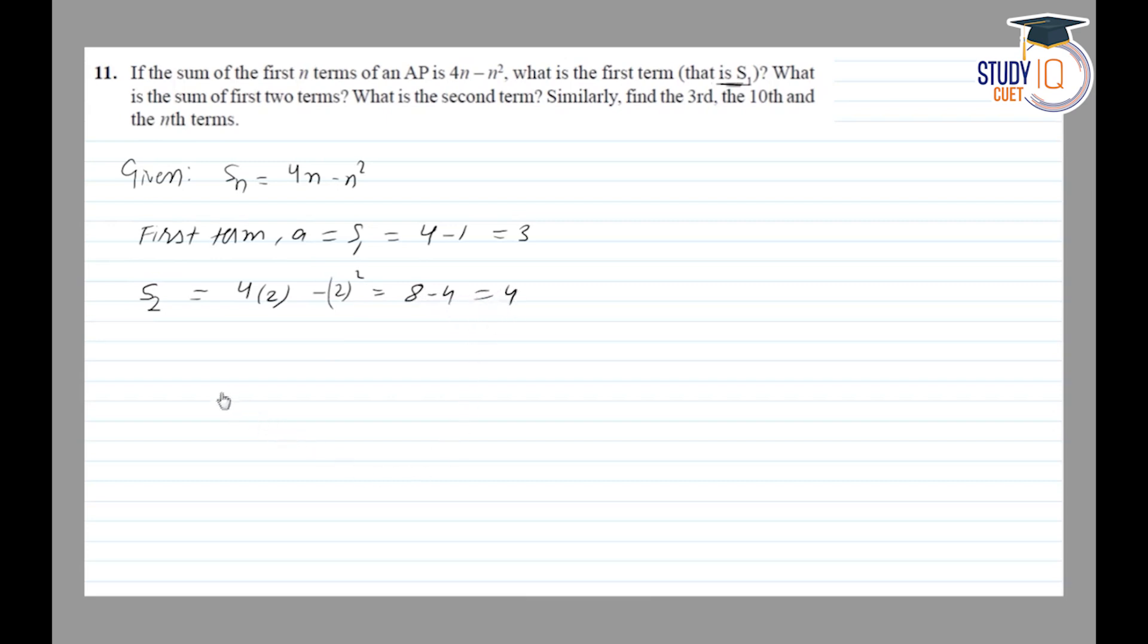Then he is asking what is the second term. Now s2 will be a1 plus a2, first term plus second term. First term we have found is 3. So 4 is equal to 3 plus a2. From here, a2 value is 4 minus 3, that is 1.